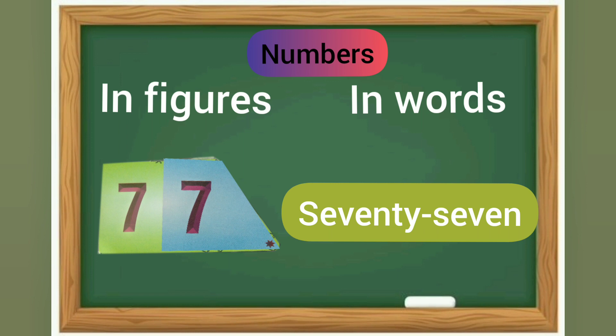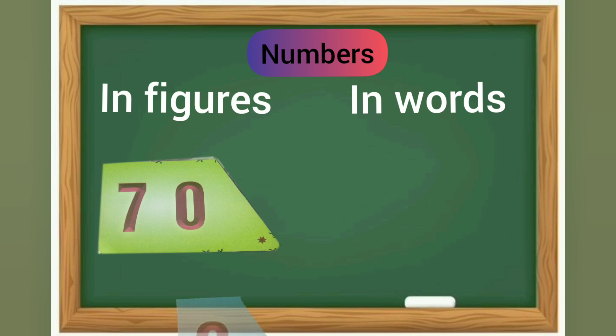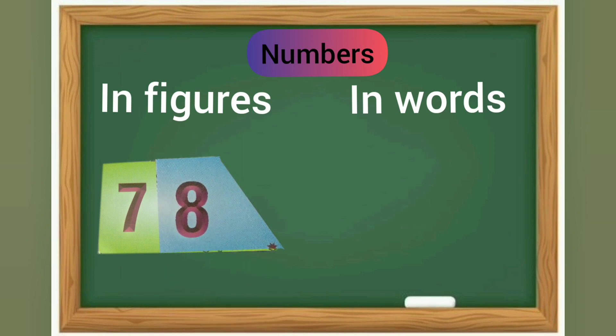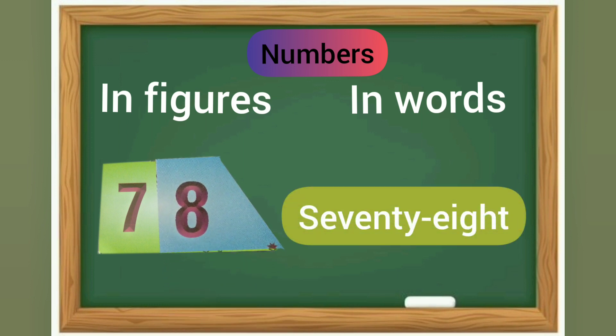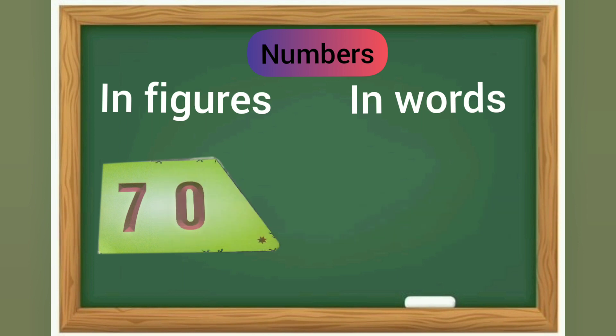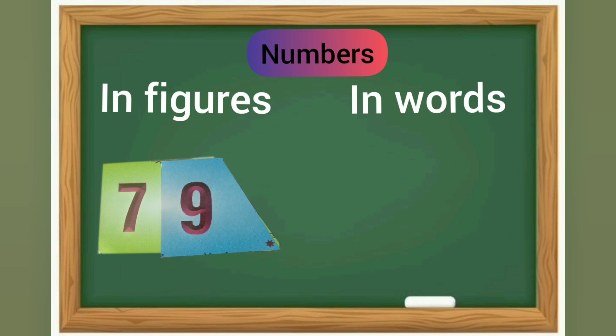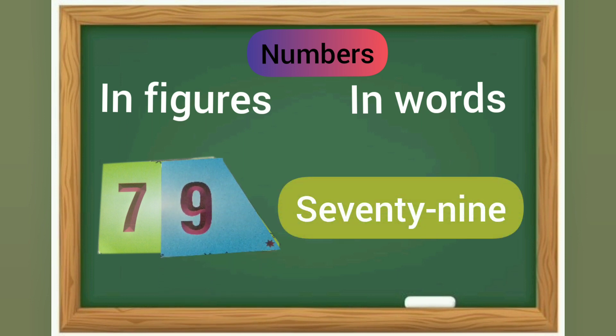77. 70 and 8 is 78. In words it is S-E-V-E-N-T-Y E-I-G-H-T, seventy-eight. 70 and 9 is 79. In words it is S-E-V-E-N-T-Y N-I-N-E, seventy-nine.